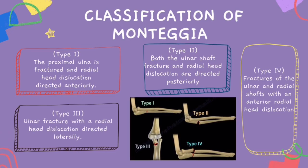For Monteggia fracture classification: Type 1 is proximal ulnar fracture with radial head dislocation directed anteriorly. Type 2 is ulnar shaft fracture and radial head dislocation directed posteriorly. Type 3 is ulnar fracture with radial head dislocation directed laterally. Type 4 is fractures of both the ulnar and radial shafts with an anterior radial head dislocation.